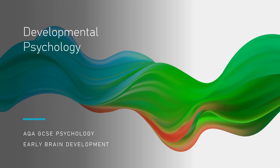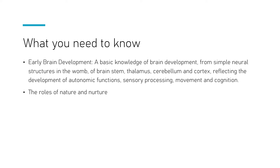Hello and welcome to this first video looking at the GCSE AQA Psychology course. This is the developmental psychology topic, so we'll be looking at early brain development in this video, and then go on to looking at some of the other developmental ideas such as Piaget's ideas. In the spec, they give you information that you'll need to know in certain sections, and this video is focused on the first part: early brain development.